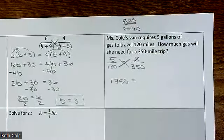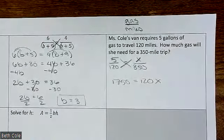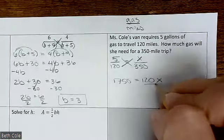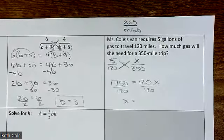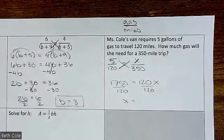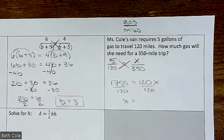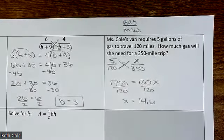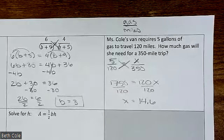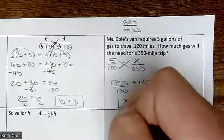Equals 120x. Good — divide by 120. I'm going to type that in because I don't know what that is off the top of my head. It came out to 14.58, so we'll say 14.6. And if it is a word problem, you need to put units — we wouldn't say 14.6 gas, we would say gallons.